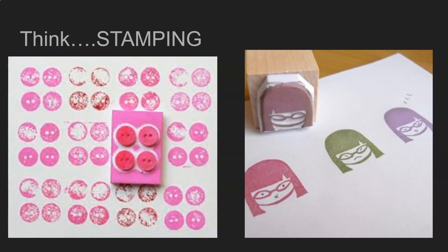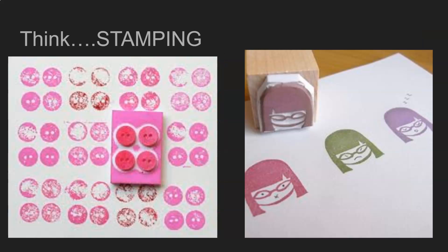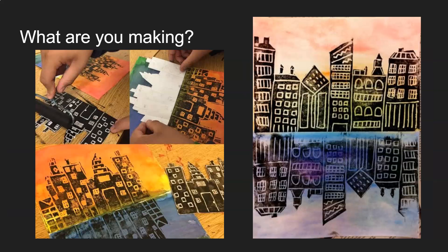That is what printmaking is. So remember, your project is cityscape printmaking — you are making a print of a cityscape. Here are some examples of what you are going to be making for your project. Instead of a stamp like the one pictured on the right, you're going to be using a styrofoam sheet.